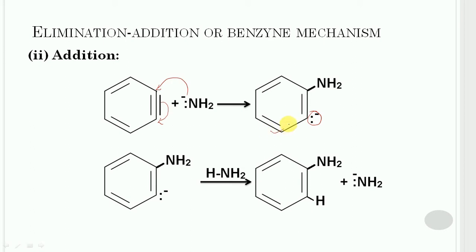This forms a carbanion intermediate. This carbanion then abstracts a proton from ammonia and finally yields the substitution product, aniline. This completes the second step, which is called the addition step.